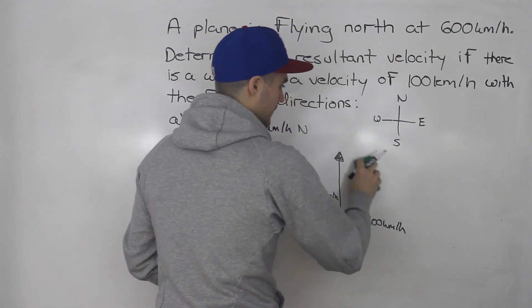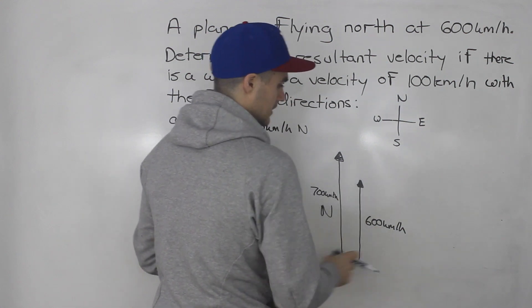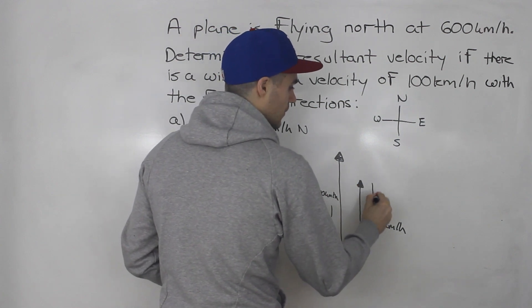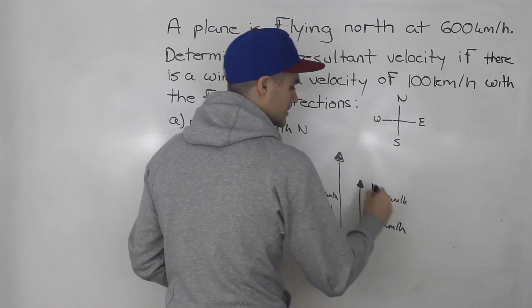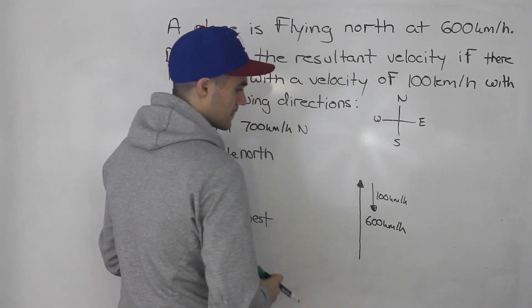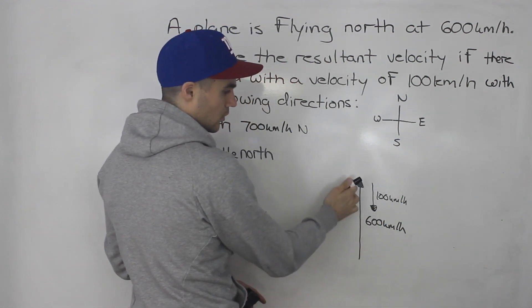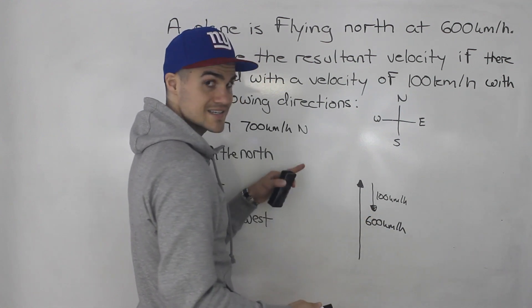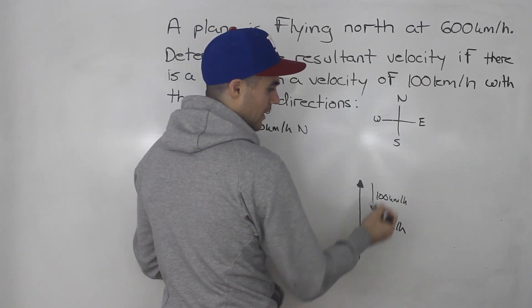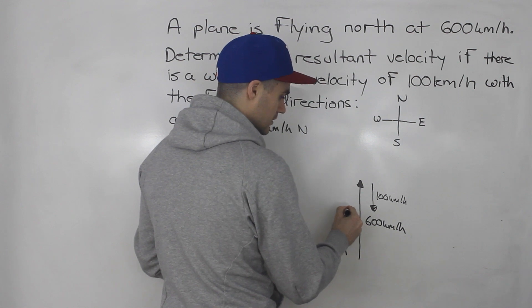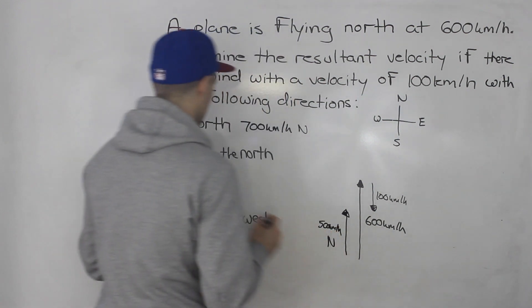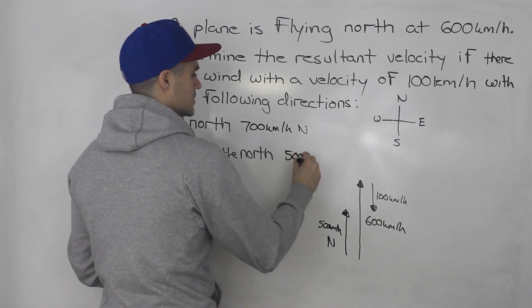For part B, the diagram looks different because the plane is still going 600 kilometers per hour north, but the wind is now going 100 kilometers per hour south — the opposite direction. The wind is slowing down the plane because it's going in the exact opposite direction, slowing it down by 100 kilometers per hour. So the resultant velocity is 500 kilometers per hour north. That is the answer to part B.